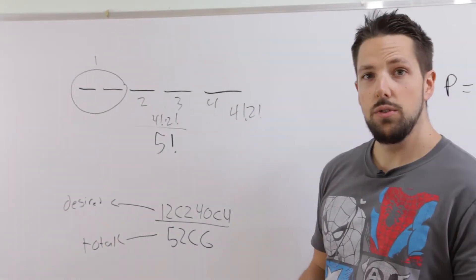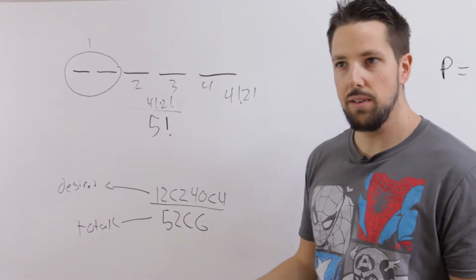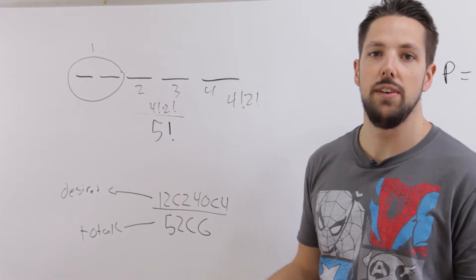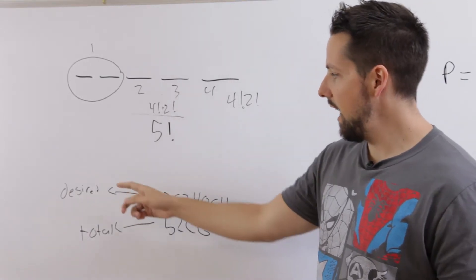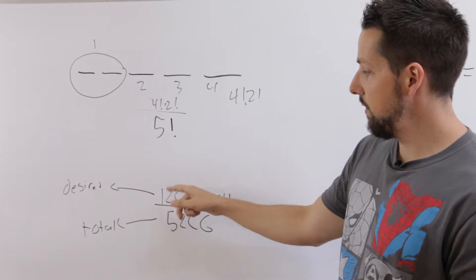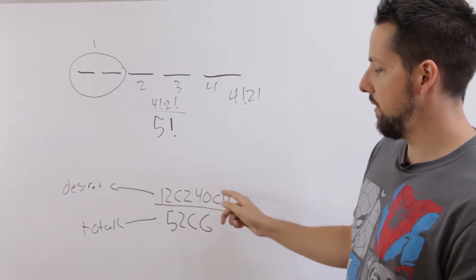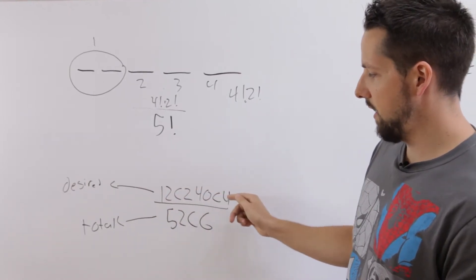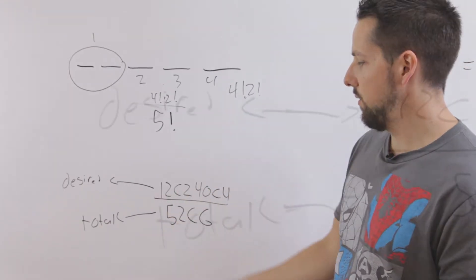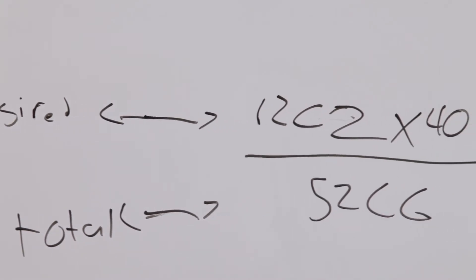We can also do it with card questions. What's the probability of choosing a six-card hand that has exactly two face cards? The desired outcome is having exactly two face cards — so we have 12 choose 2 for picking the two face cards, then choosing the remaining four from the rest of the cards. That's our desired. We put it all over the total, which is 52 choose 6 with no restrictions.